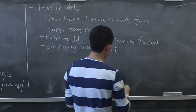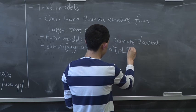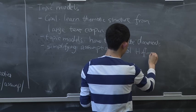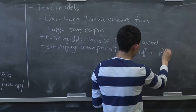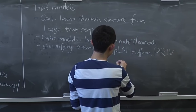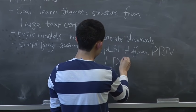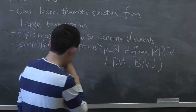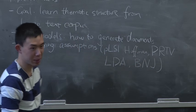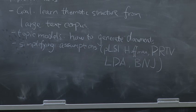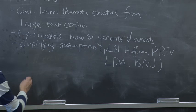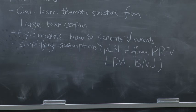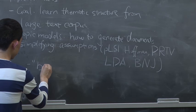There is a long line of work here. There's the first model called PLSI by Hoffman and by Papadimitriou and others. Later there's a famous work called Latent Dirichlet Allocation by David Blei, Andrew Ng, and Mike Jordan. Hundreds or maybe thousands of papers have followed. From this long line of work, several important assumptions were identified. The first assumption is called the Bag of Words assumption.